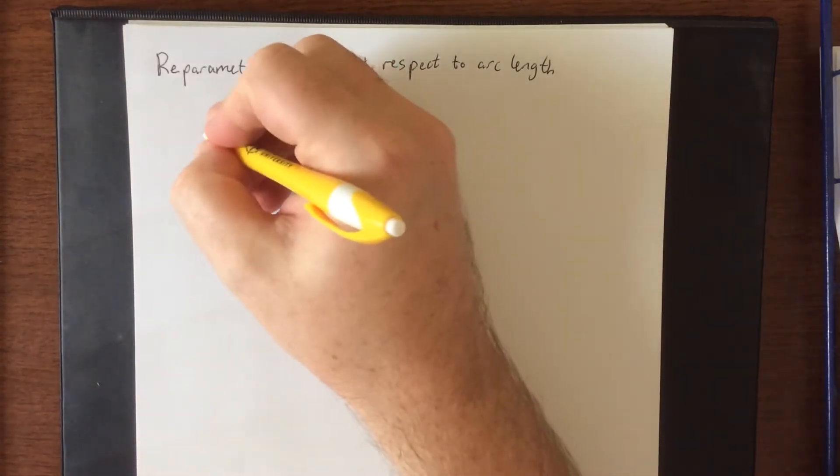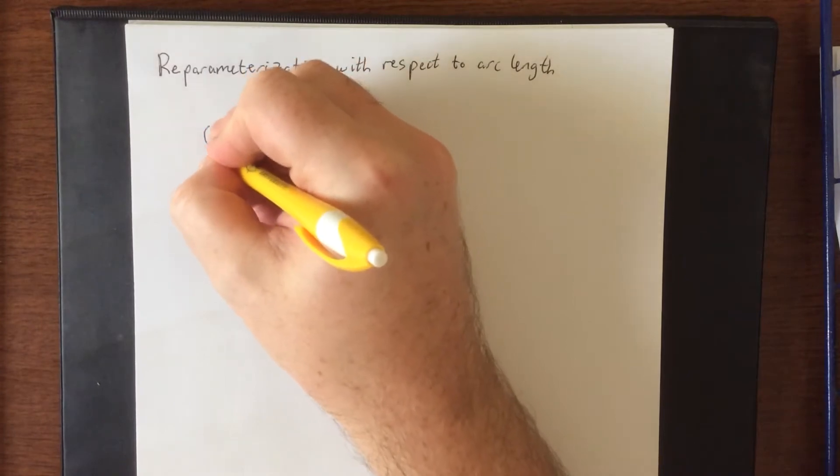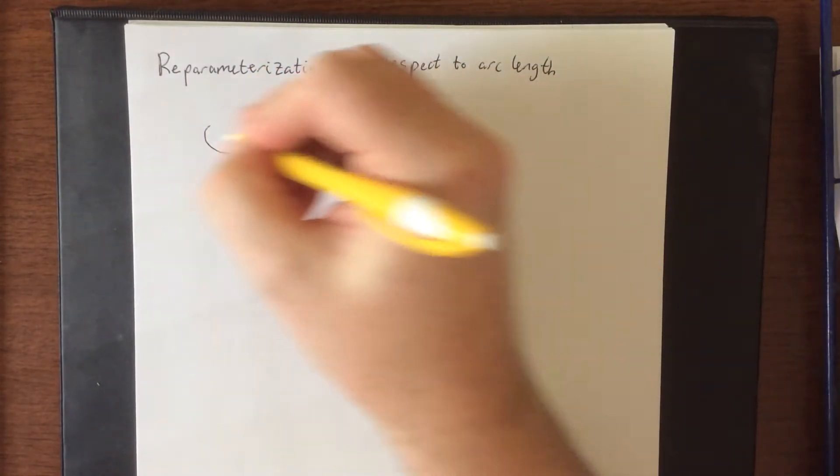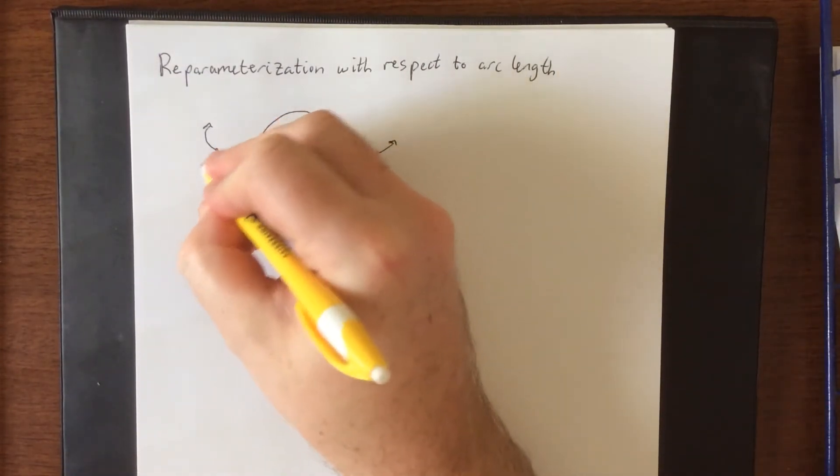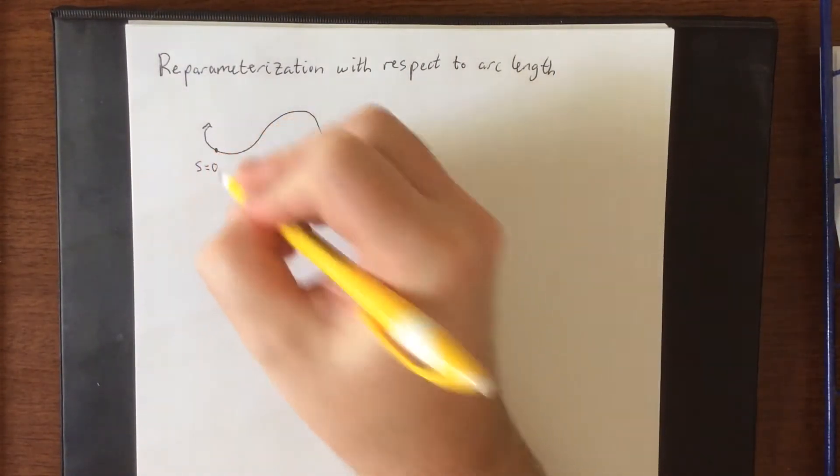So let's say, for the sake of argument, that you have a space curve going through space like so. You're given a starting point. We refer to that as your initial position. We'll call that s equals 0.